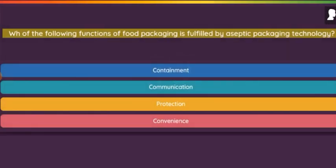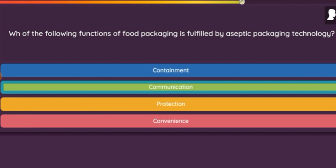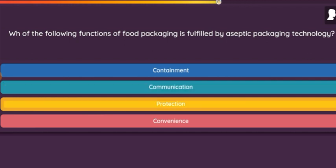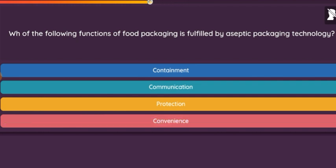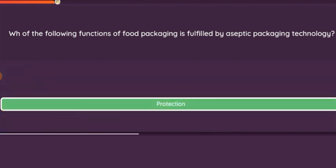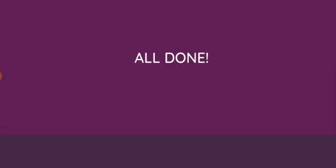Question: Which of the following functions of food packaging is fulfilled by aseptic packaging? Option 1: Containment. Option 2: Communication. Option 3: Protection. Option 4: Convenience.